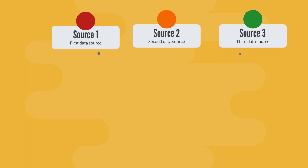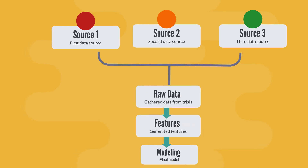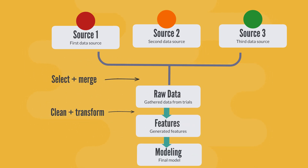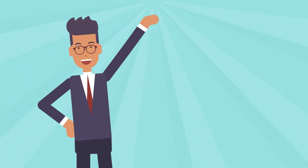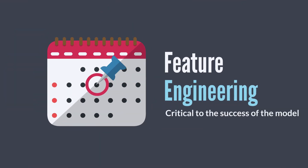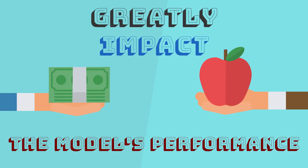Feature engineering is the process of selecting and transforming the input variables — also known as features — used to train the ML model. This step is critical to the success of the model, as the chosen features can greatly impact the model's performance.